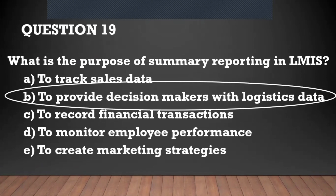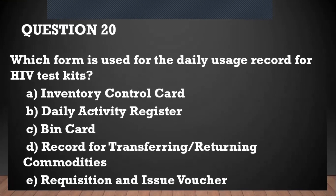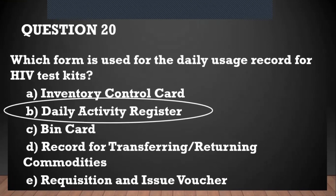You want to be able to provide decision makers with logistics data. That is why it is summarized into a report — to give them a whole picture or a bird's-eye view of what is happening in the system. Question number twenty: which form is used for the daily usage record for HIV kits? That will be the daily activity register.